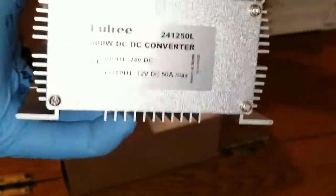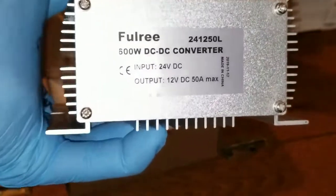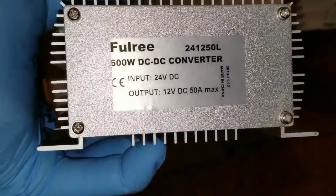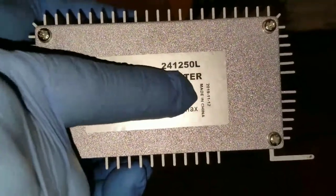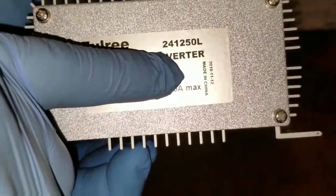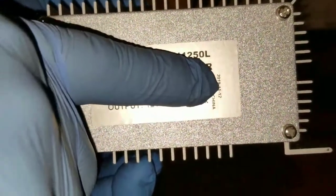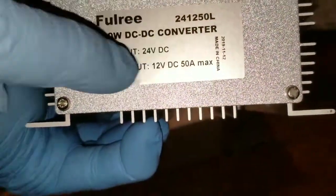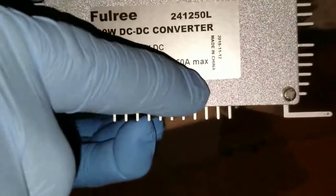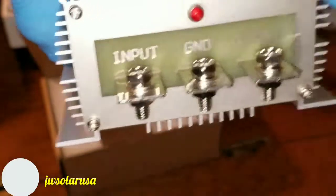Look at the aluminum and the heat sink, it's really big. That's the model number 2412-50L. That tells you 24 volt to step down 12 at 50. The 24 volts is the input, output is 12 volts at 50 amps. It's manufactured on the 12th month, the 11th, 2019, so it's brand new.